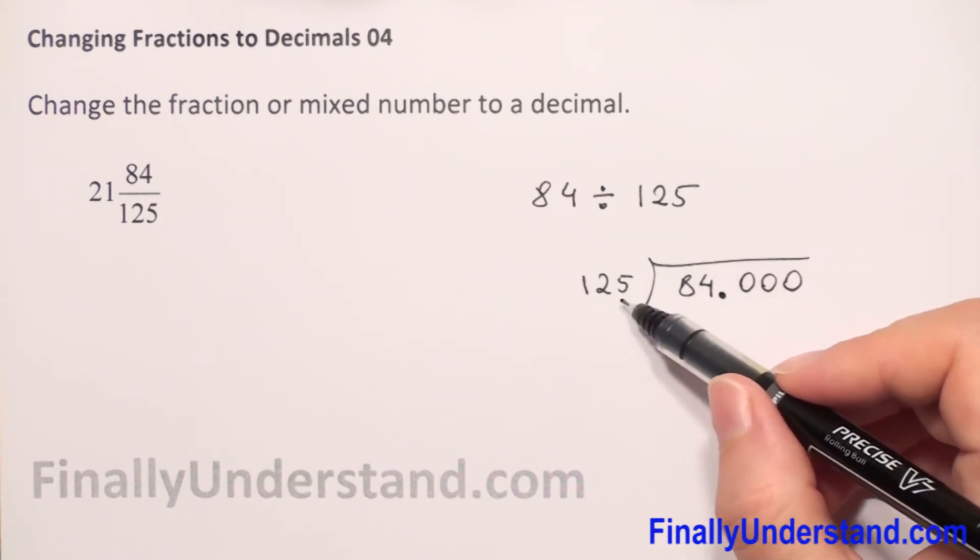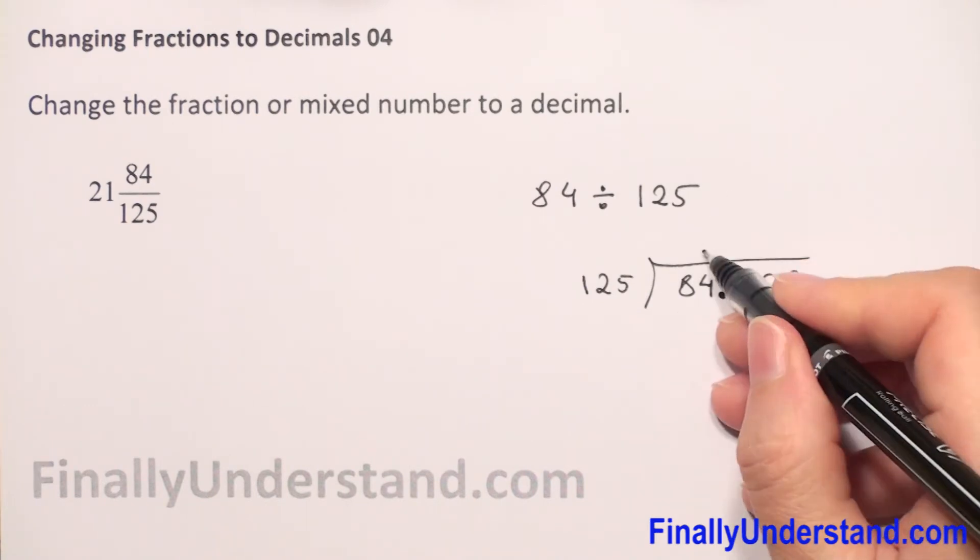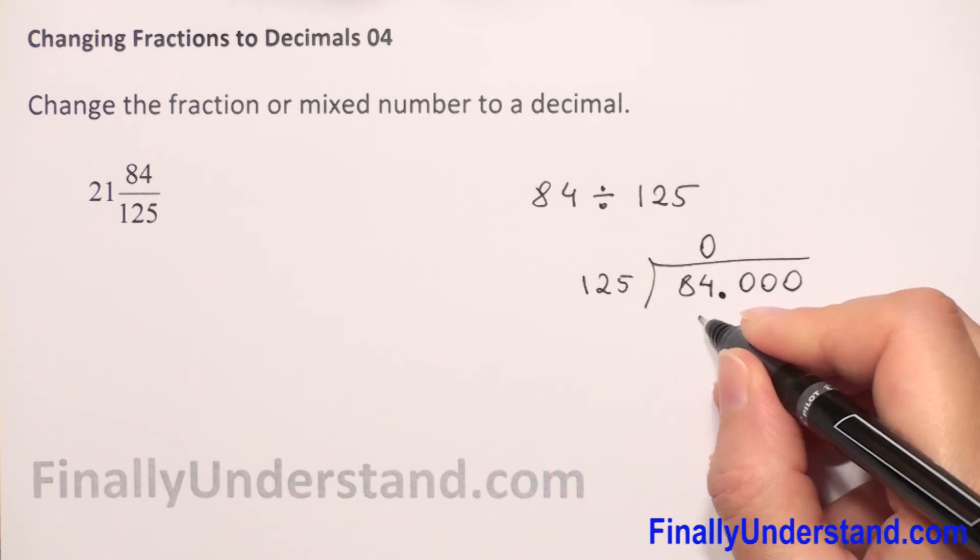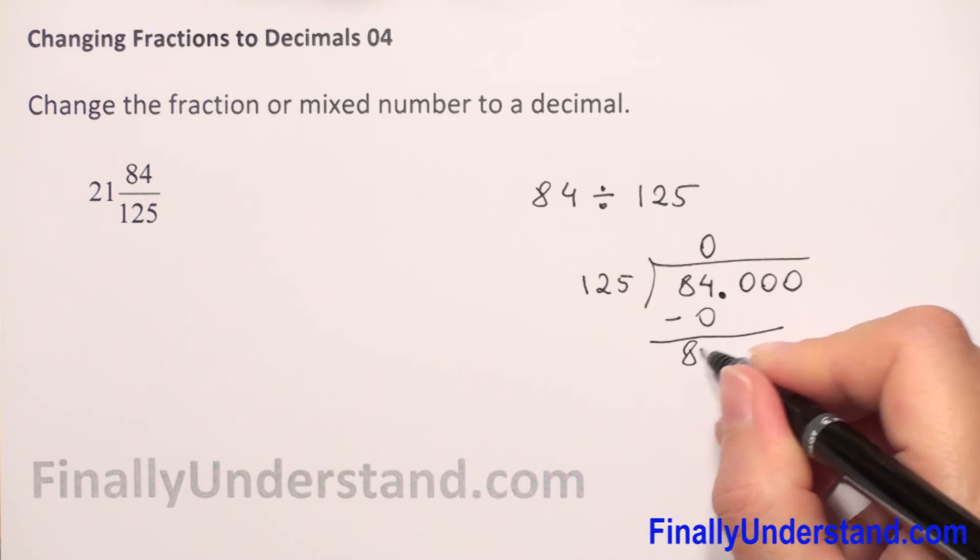Like I said, 125 goes into 84 zero times. Zero times 125 is zero. We have to do subtraction: 84 minus zero is 84.